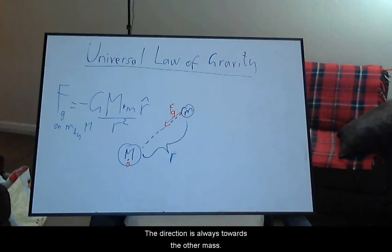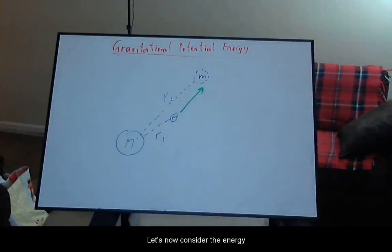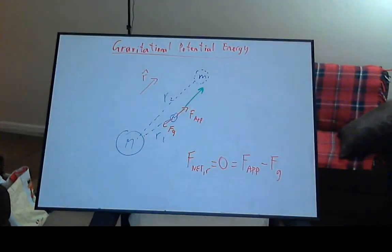The direction is always towards the other mass. Let's now consider the energy needed to move the mass from radius 1 to radius 2. We will apply a force against gravity to move the mass at a constant speed. In that case, the net force in the radial direction must be zero, and hence the magnitude of the applied force must equal the magnitude of the force of gravity.